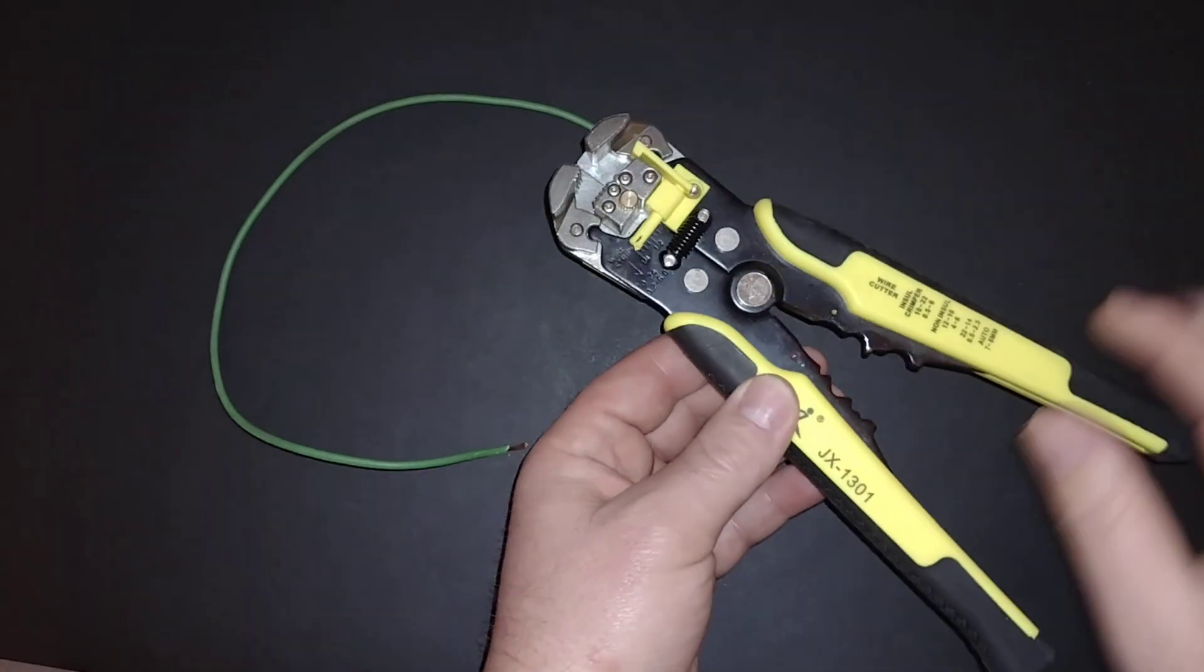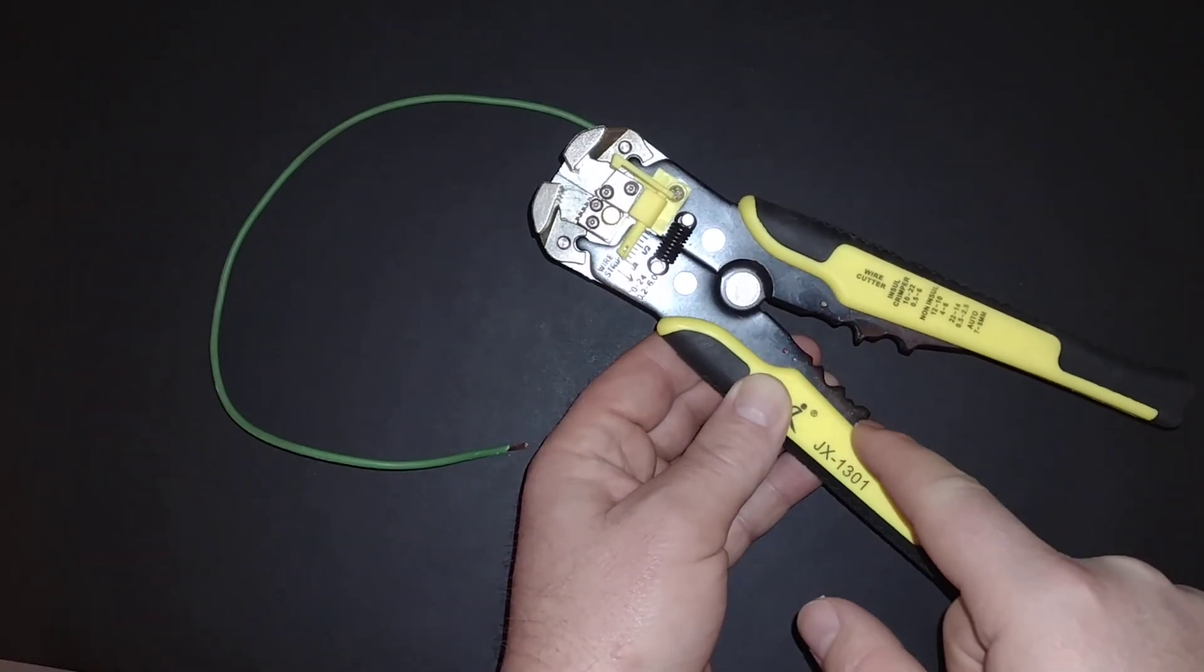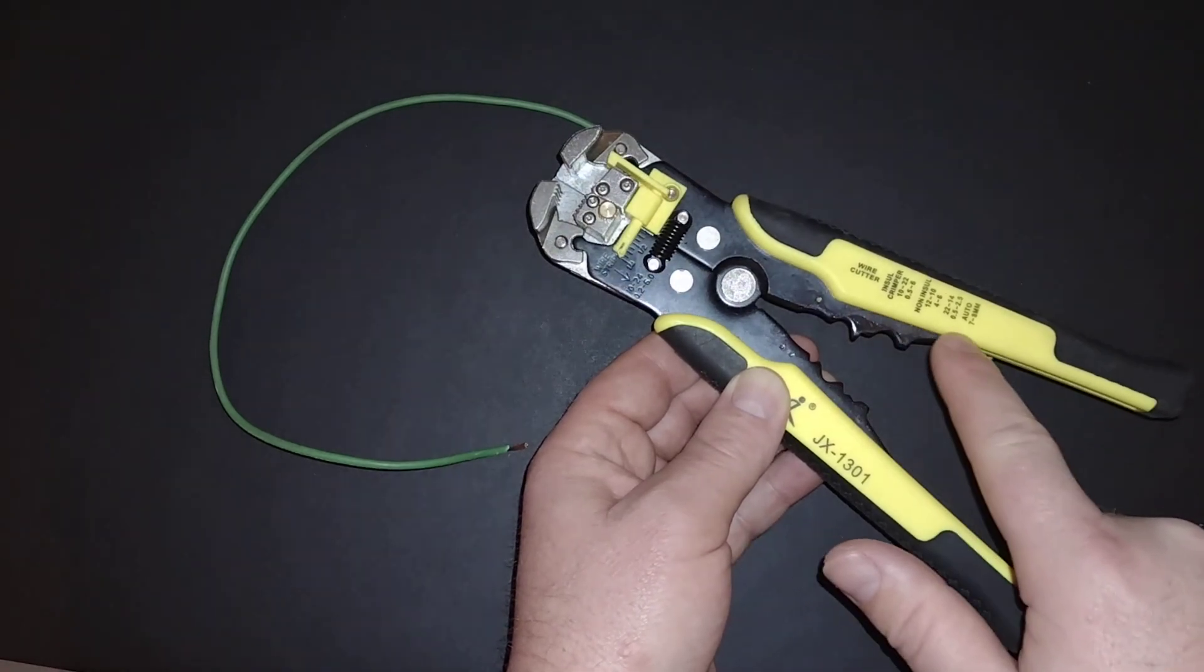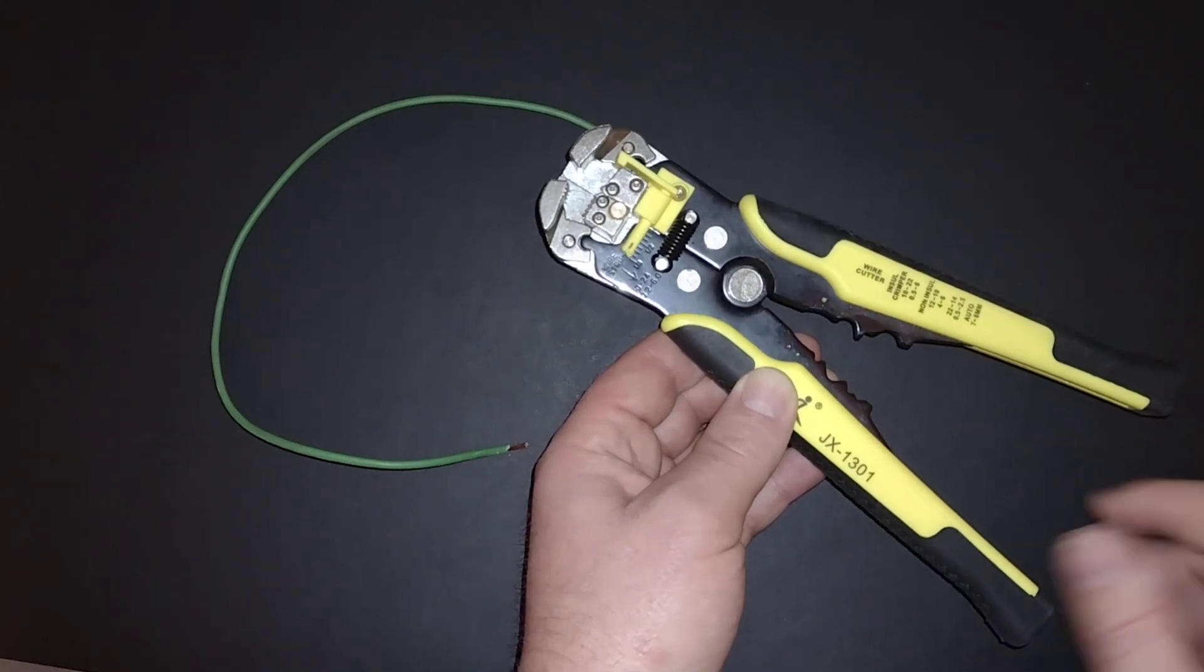There's also a cutter right down here, and then you have your standard crimps - the insulated crimps, the blues, the yellows, the reds - to be able to crimp those.